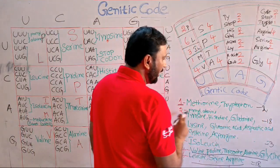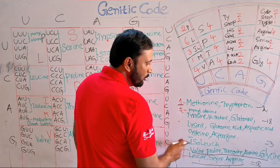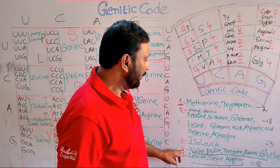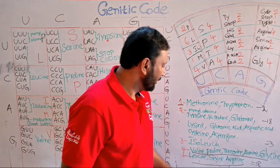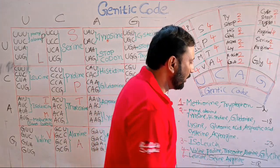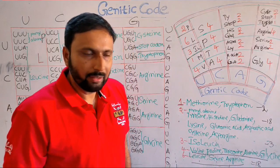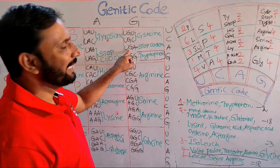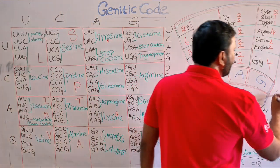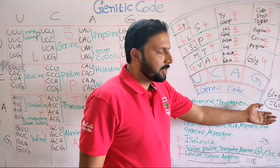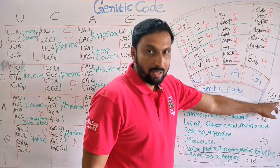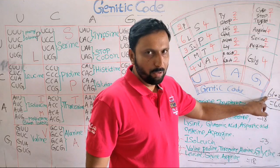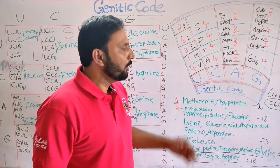Two amino acids coded by one codon: 2×1=2. Nine amino acids coded by two codons: 9×2=18. Isoleucine coded by three codons: 1×3=3. Five amino acids coded by four codons: 5×4=20. Three amino acids coded by six codons: 3×6=18. Total: 2+18+3+20+18=61 codons. Three stop codons — UAA, UAG, UGA — so 61+3=64 codons. Of these, 61 are sense (sensible) codons and three are nonsense codons.